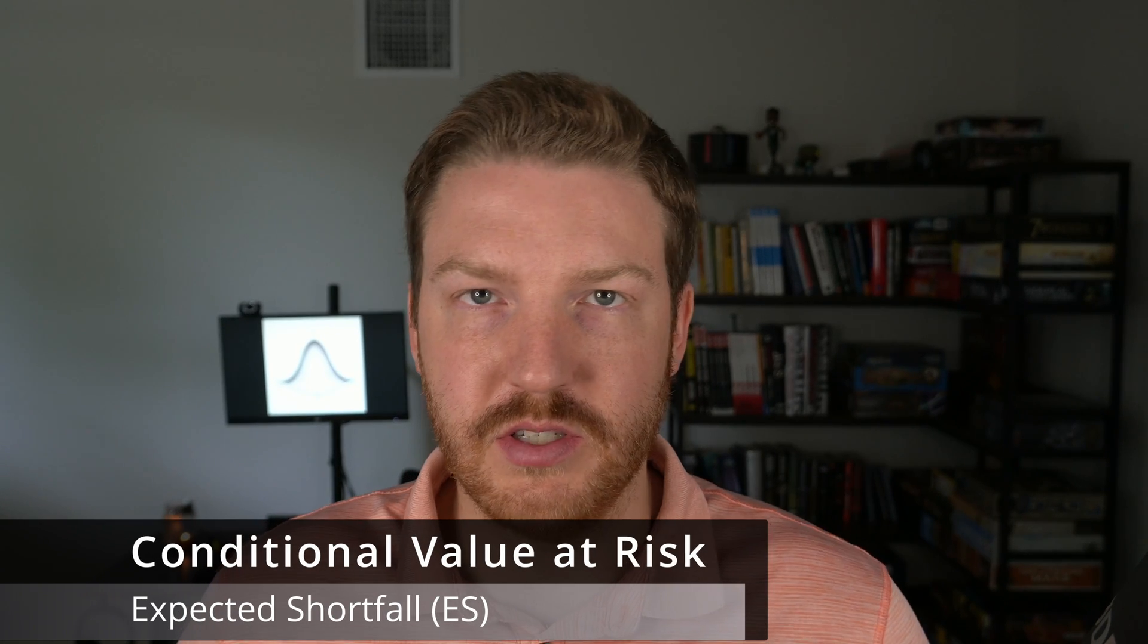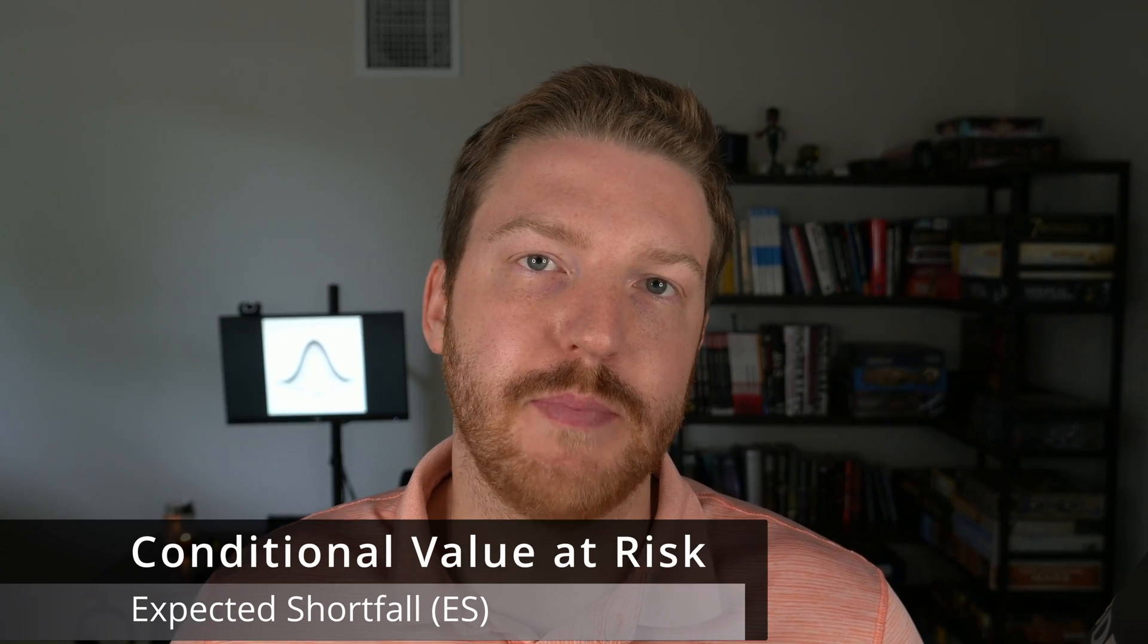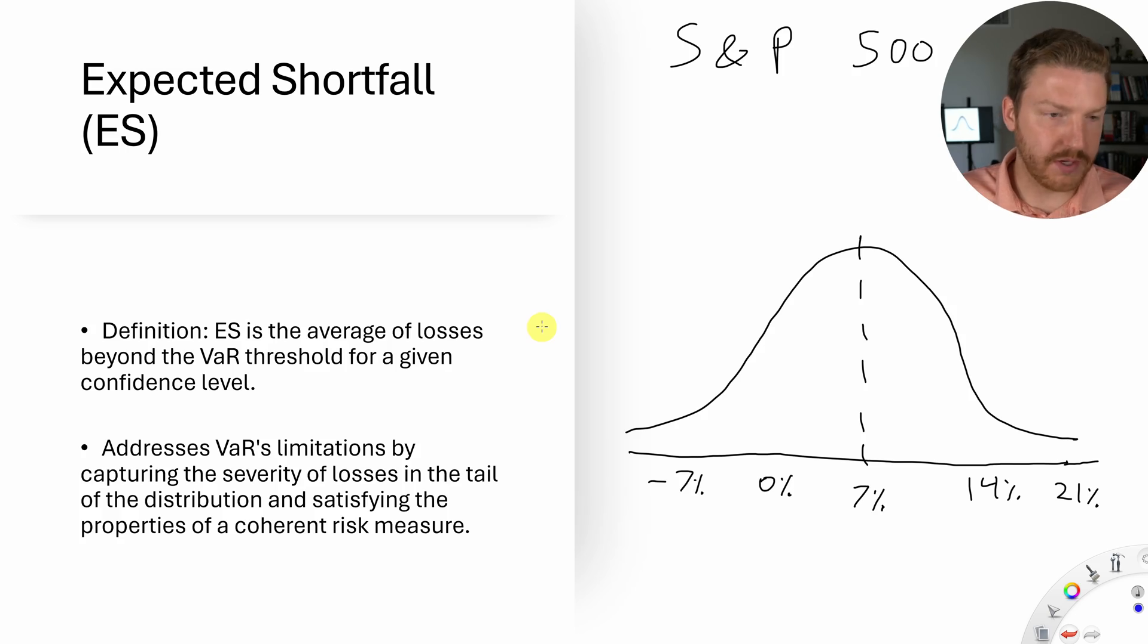So this is what was happening in 2008 is they did not account for this high tail risk. Now let's talk about conditional value at risk or expected shortfall. Expected shortfall is the average loss beyond the VaR threshold for a given confidence level. So let's say we stick with the same example. We have the one year returns for S&P 500. Average returns about 7%, and then we have this sort of distribution just like the last time.